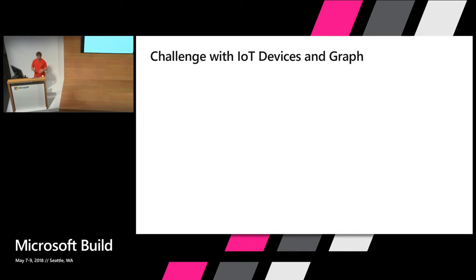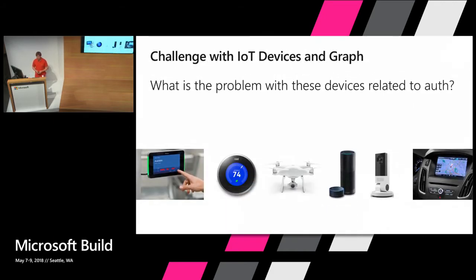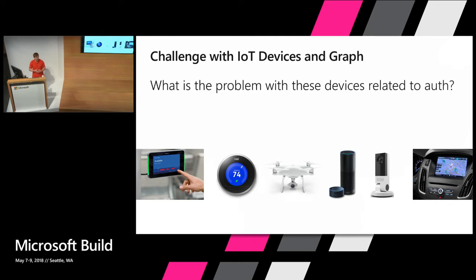When we look at the first thing to consider, it's what are the challenges of working with the Graph on an IoT device. What is the problem these devices have related to auth? I wouldn't say it's CPU - it's pretty amazing what these small devices have from a CPU standpoint these days.